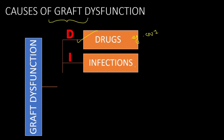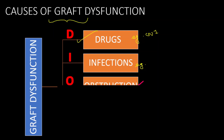Second is infection. BKV virus, CMV, or any kind of sepsis-related infections can cause graft dysfunction.